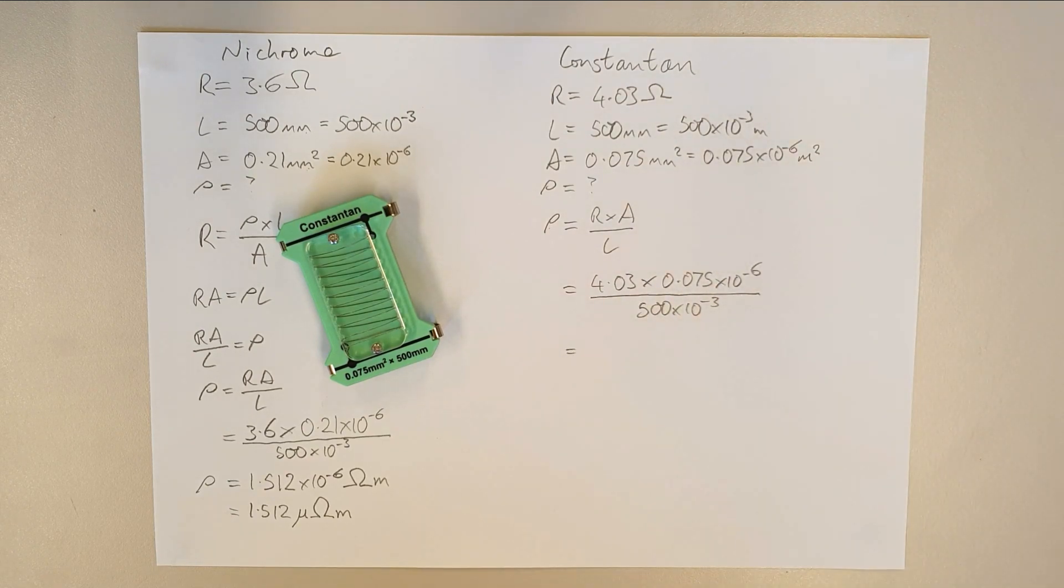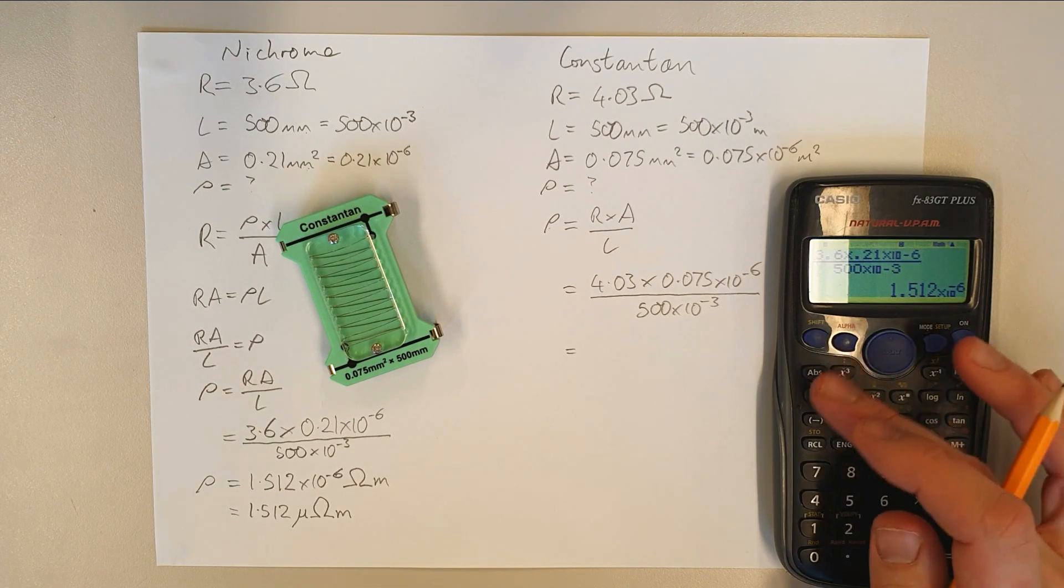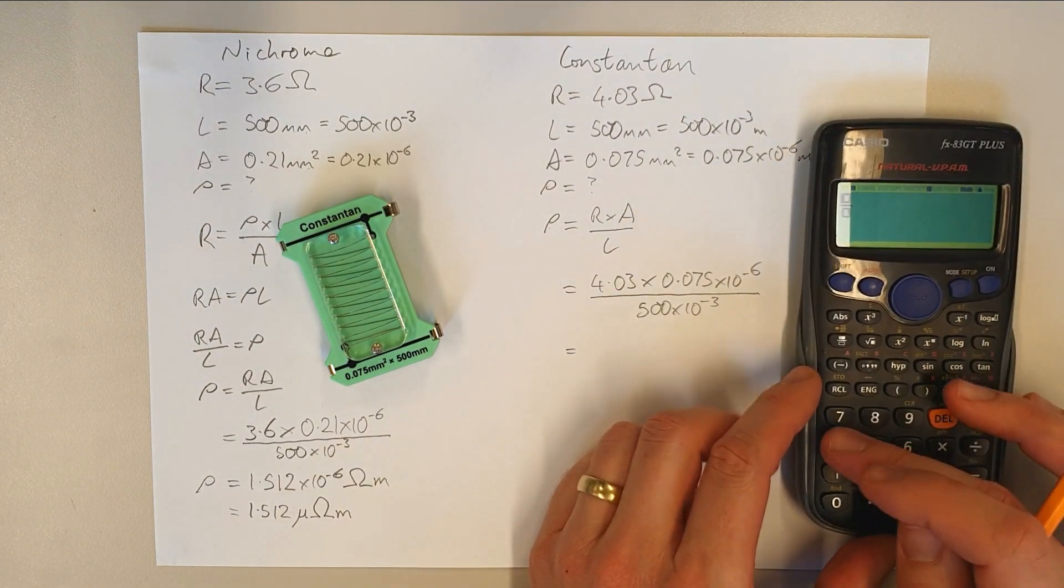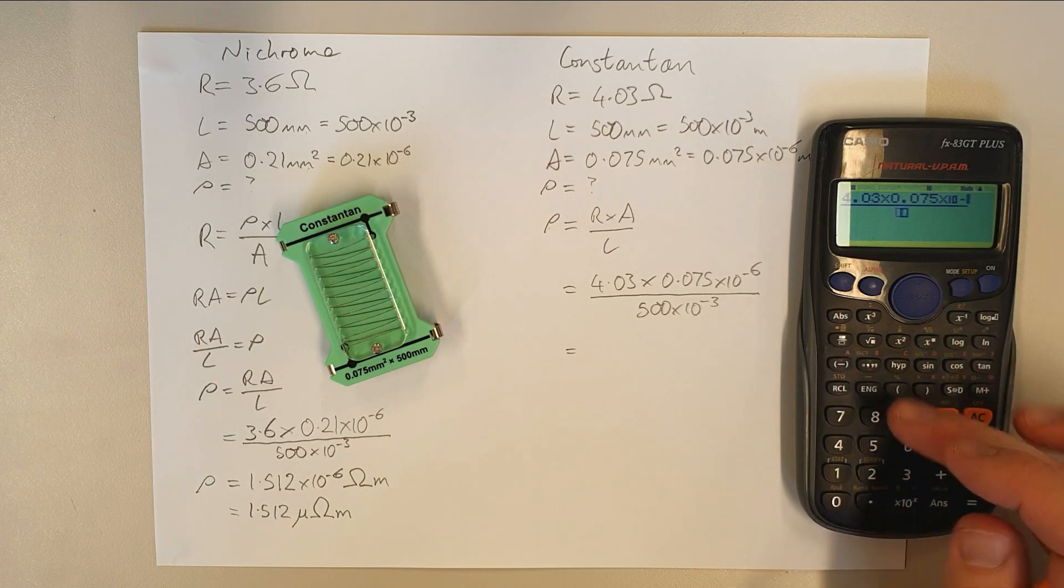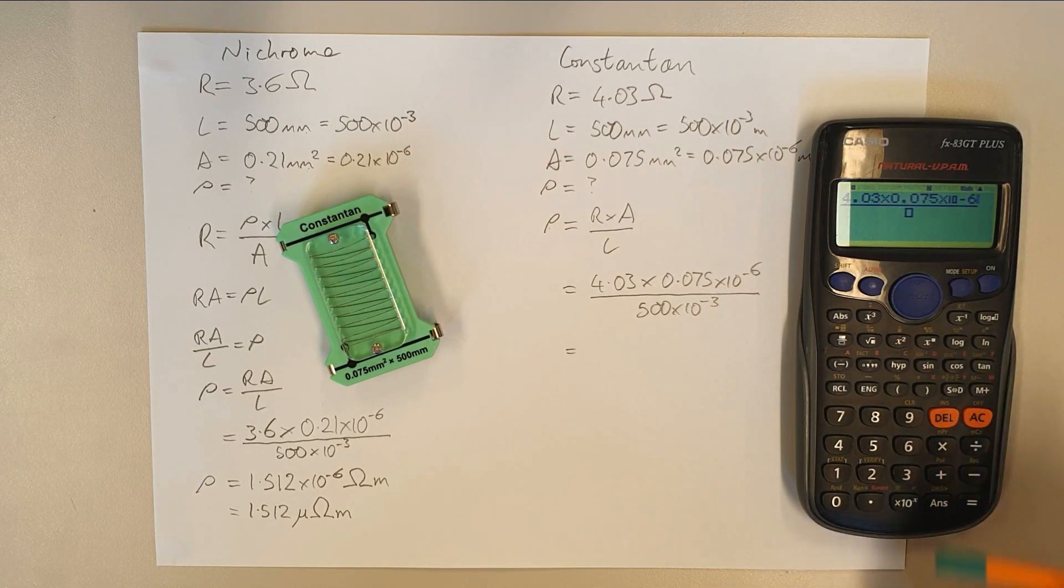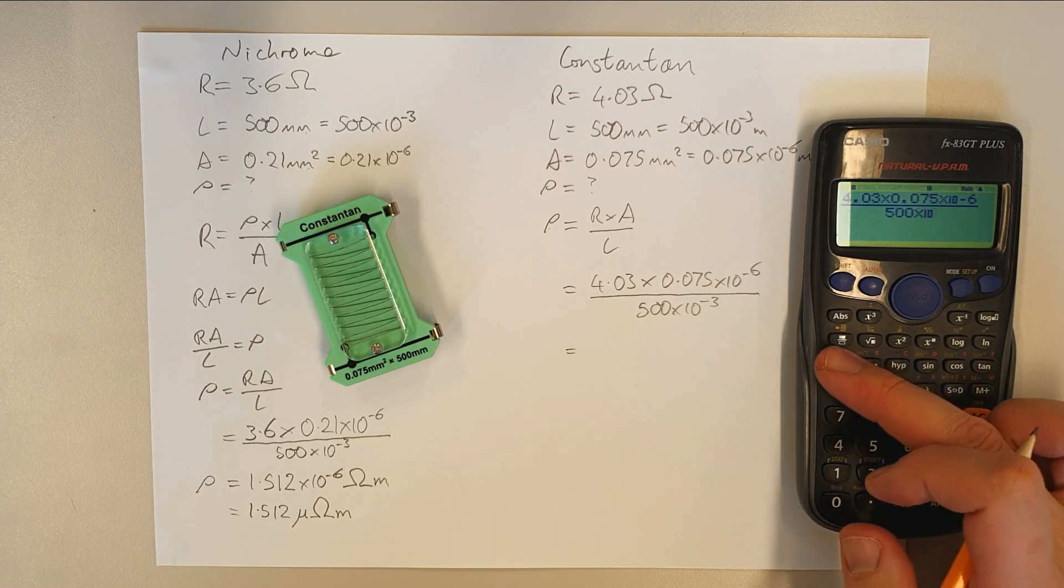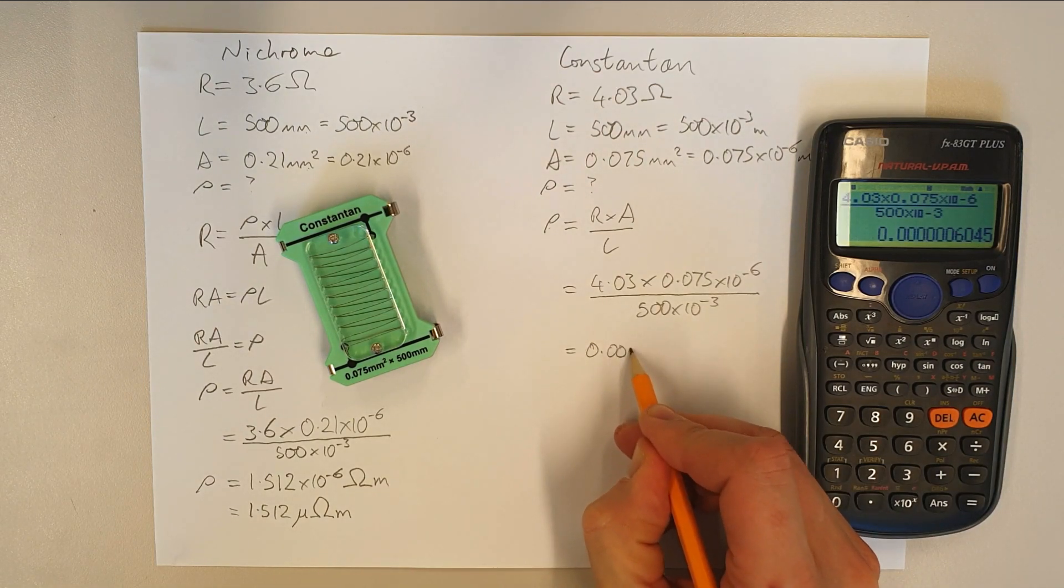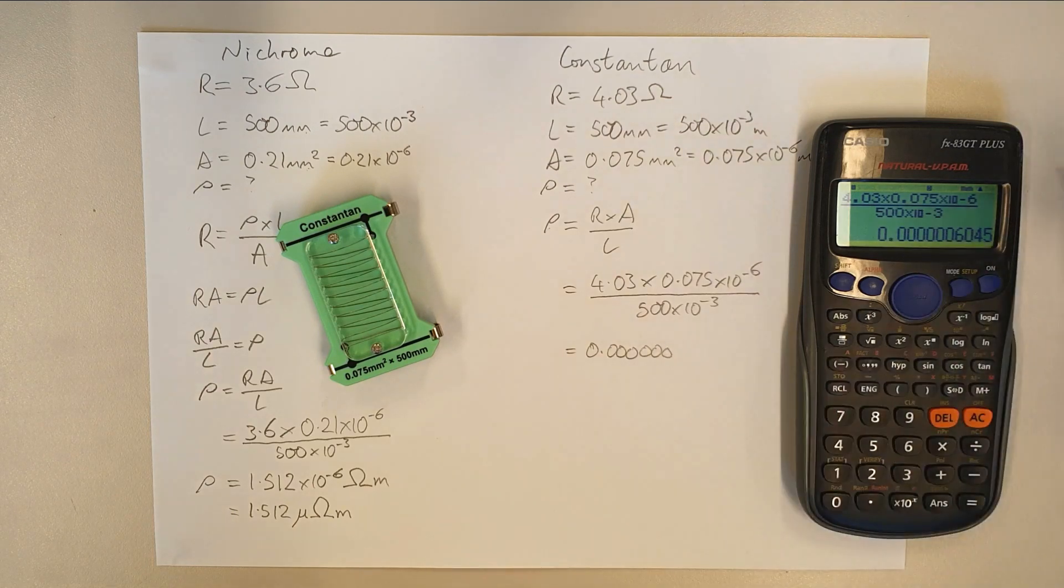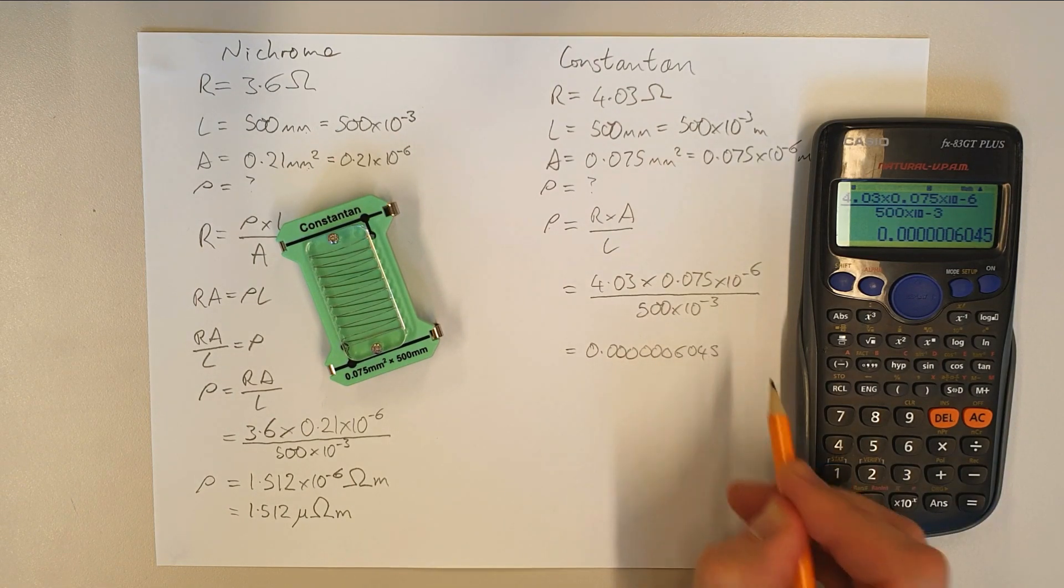So again, we'll bring our calculator over. One more time, we'll put the formula in just for the sake of completeness. So you can see there that our calculator that we'll put in will be 4.03 times by 0.075 times 10 to the minus 6. Notice I'm using that button there. I'm not typing in times 10. I just use one button press and it gives me the times 10. And then this becomes the power when you put that in over 500 times 10 to the minus 3. And hit equals and it gives us an answer of 0.0000006045.